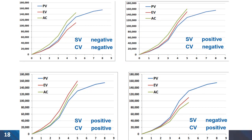Comparing planned value, earned value, and actual cost, multiple situations can happen. For example, in the first plot we can see that the earned value graph is below both planned value and actual cost. This indicates a negative schedule variance and also a negative cost variance.